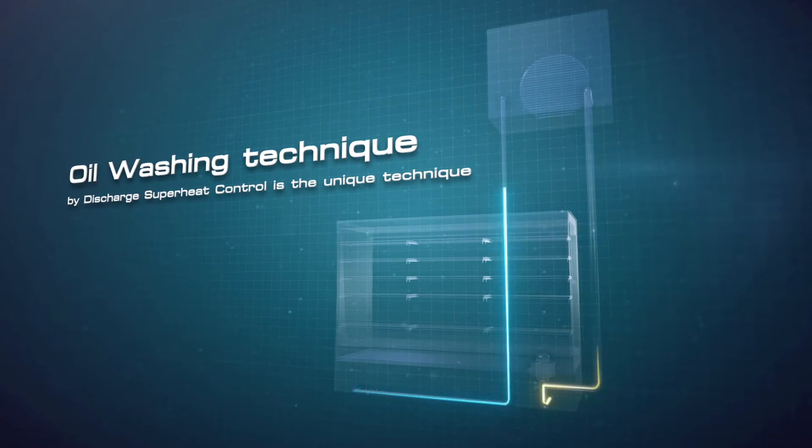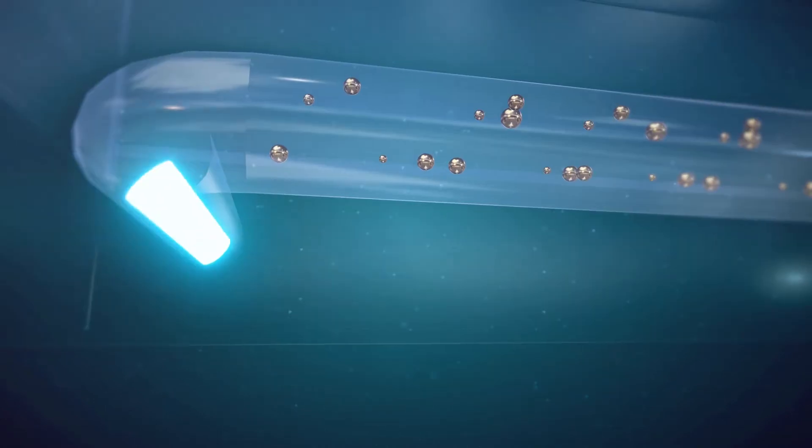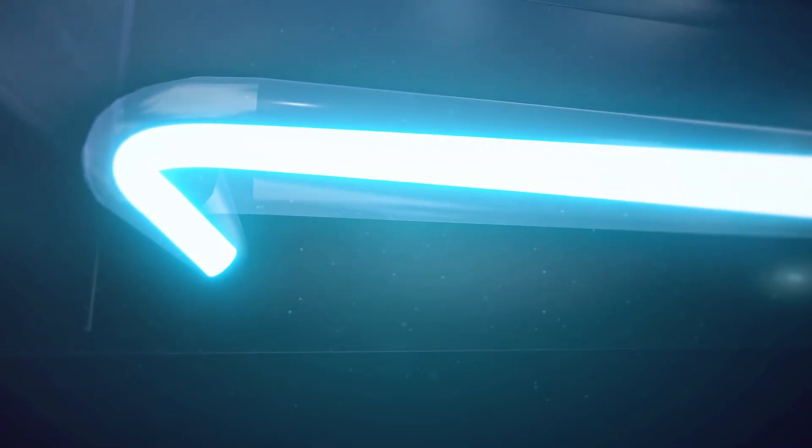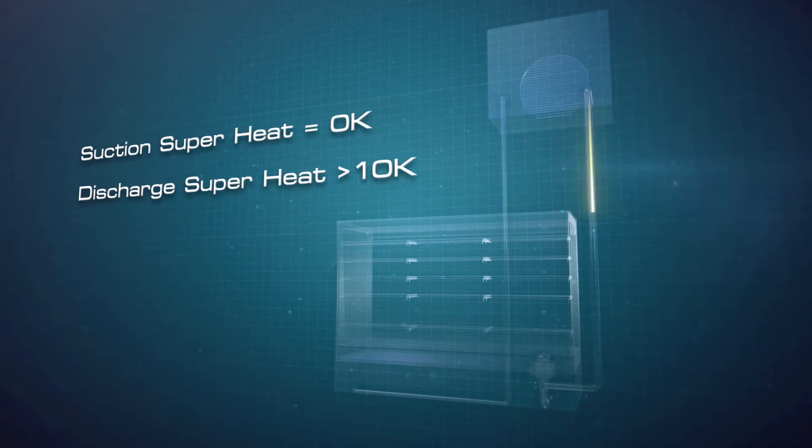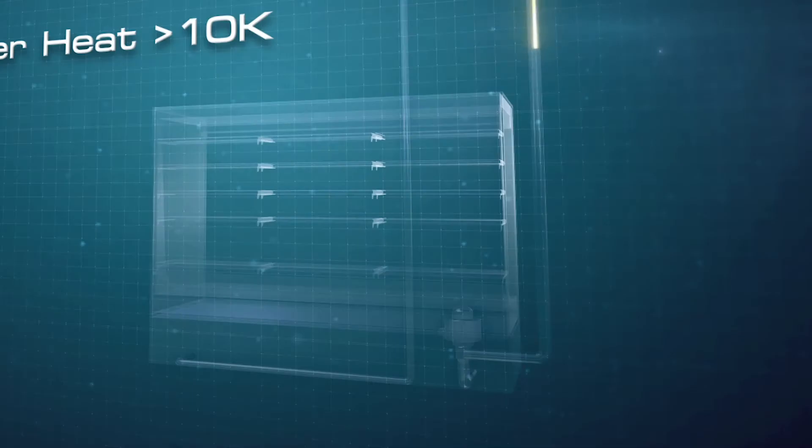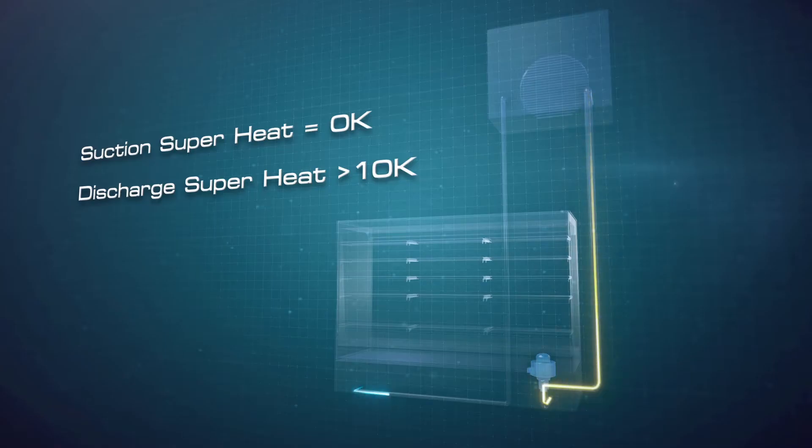During the oil washing process, the refrigerant will be partially condensed from gaseous to liquid by controlling the suction superheat to zero and discharge superheat to higher than 10 Kelvin. EEV valve openings are regulated evaporator by evaporator in a timely manner to return the oil to the compressor.